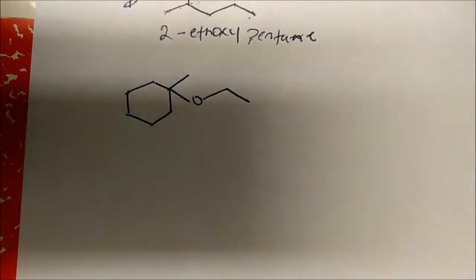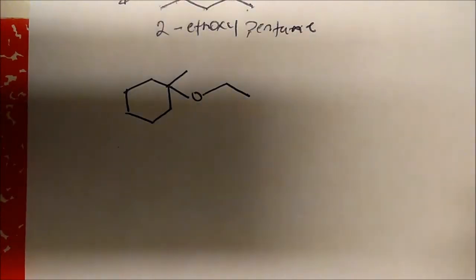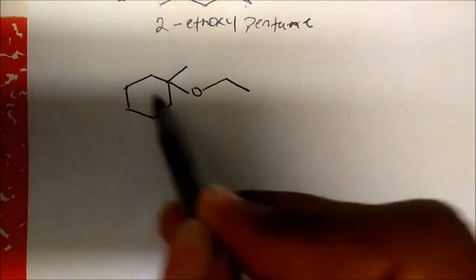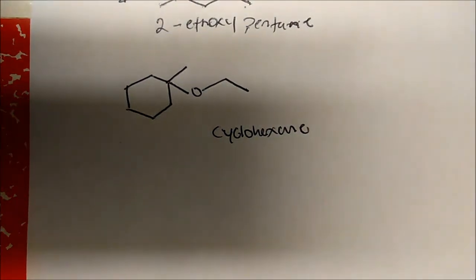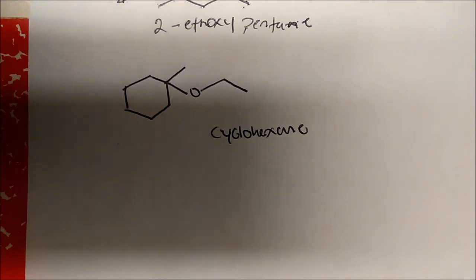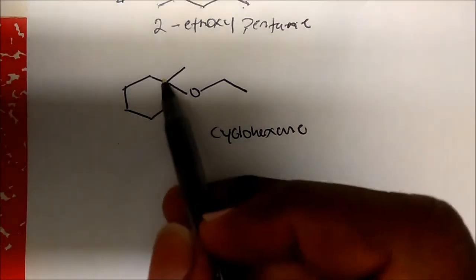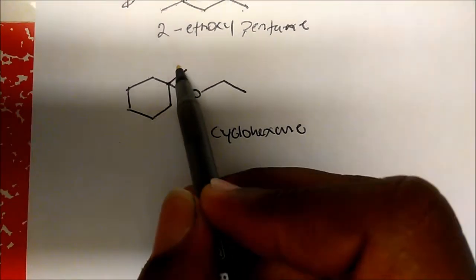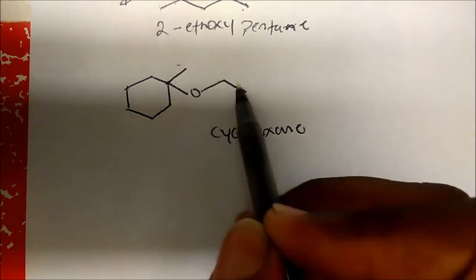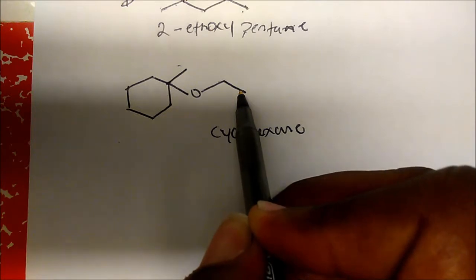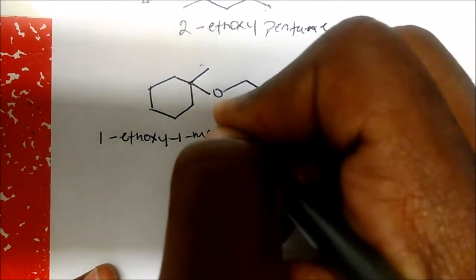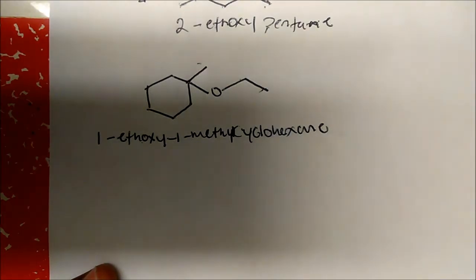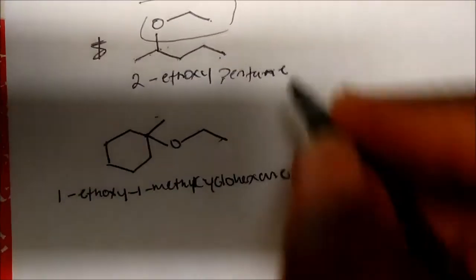What if we're given a molecule where the parent chain is a cyclohexane? Your parent chain is cyclohexane. Now we look at the substituents, and because we want to give them the lowest possible numbers, this position is carbon one. On carbon one we have a methyl group, and also on carbon one we have one, two carbons with an oxygen — an ethoxy group. Since E comes before M alphabetically, this is 1-ethoxy-1-methylcyclohexane. These are IUPAC names.